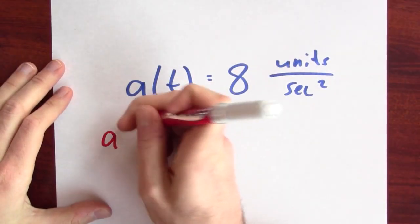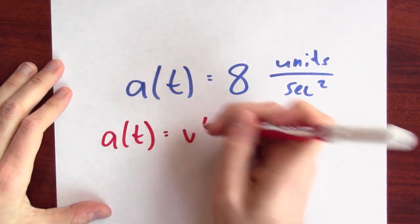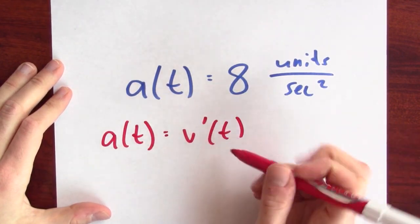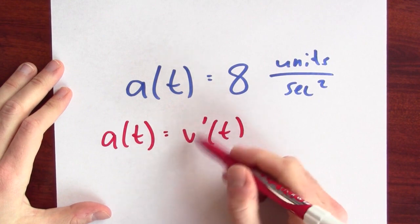Is that enough information to determine my velocity? We have to think back to how velocity and acceleration are related. Well, by definition, acceleration is the change, the derivative in velocity. Acceleration is rate of change in velocity.